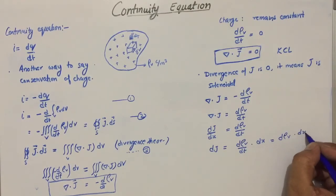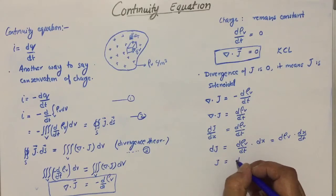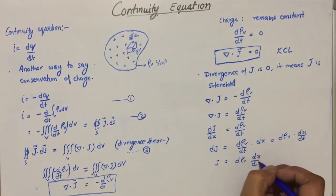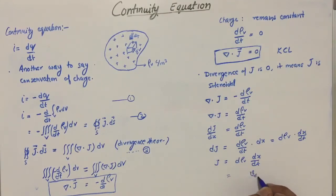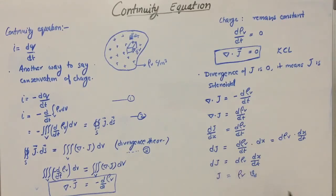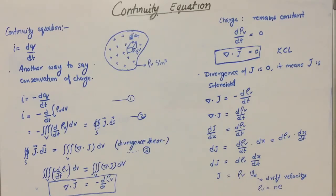This can be written as ρv times dx/dt. If we write J, the current density, then J equals ρv times dx/dt. The term dx/dt is velocity, which is named the drift velocity vd. So the full current density J equals ρv times vd. I think you are all familiar with drift velocity, so no need to discuss it here again.